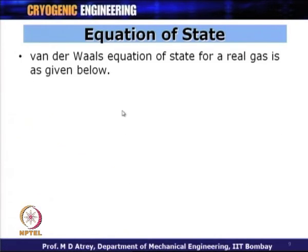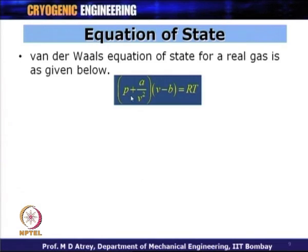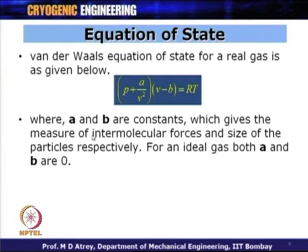This can also be understood using the Van der Waals equation. The Van der Waals equation of state for a real gas is: (P + A/V²)(V − B) = RT, where A and B are constants. A gives the measure of intermolecular forces, while B denotes the size of the particles. For an ideal gas, A and B are zero, reducing to PV = RT.